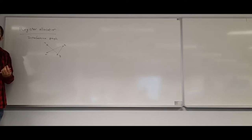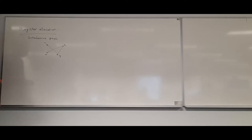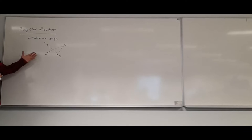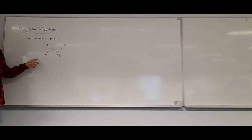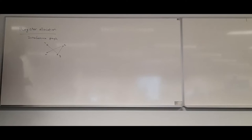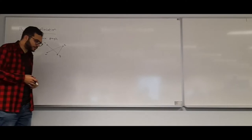The question is: what is the minimum number of registers that I need? You can see that this is basically a graph coloring problem. I want to color this graph with the minimum possible number of colors so that the colors at the two ends of every edge are different. So this is our register allocation problem.